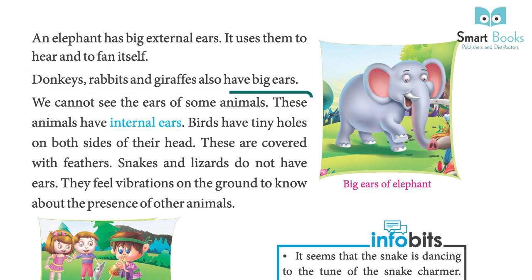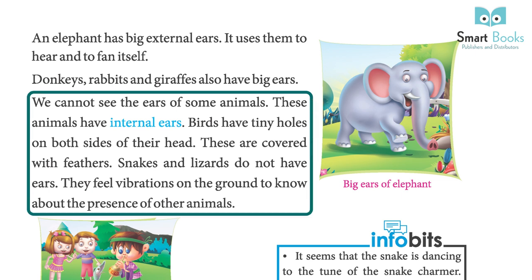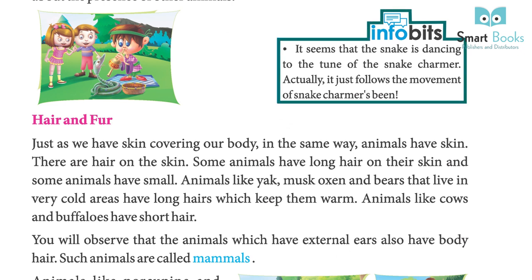Donkeys, rabbits, and giraffes also have big ears. We cannot see the ears of some animals — these animals have internal ears. Birds have tiny holes on both sides of their head, covered with feathers. Snakes and lizards do not have ears; they feel vibrations on the ground to detect the presence of other animals. When a snake appears to dance to a snake charmer's tune, it is actually just following the movement of the charmer's been (flute).